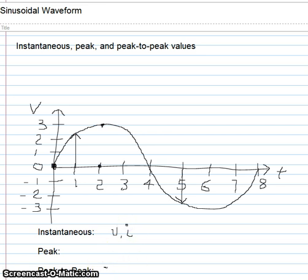The next value we need to know is the peak value. The peak value of a sine wave is the value of the voltage or current at the positive or the negative maximum peak with respect to 0. In this sine wave, the peak value occurs at t equal to 2 seconds and has a value of 3 volts and is called the maximum peak value.